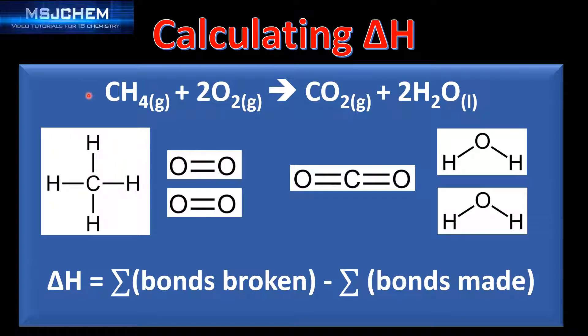In this example we're going to calculate the enthalpy change for this reaction - methane burning in oxygen to form carbon dioxide and water. As you can see I've drawn out the structural formula of the methane, the oxygen, the carbon dioxide and the water. This allows us to see how many of which bond are being broken and how many are being made.